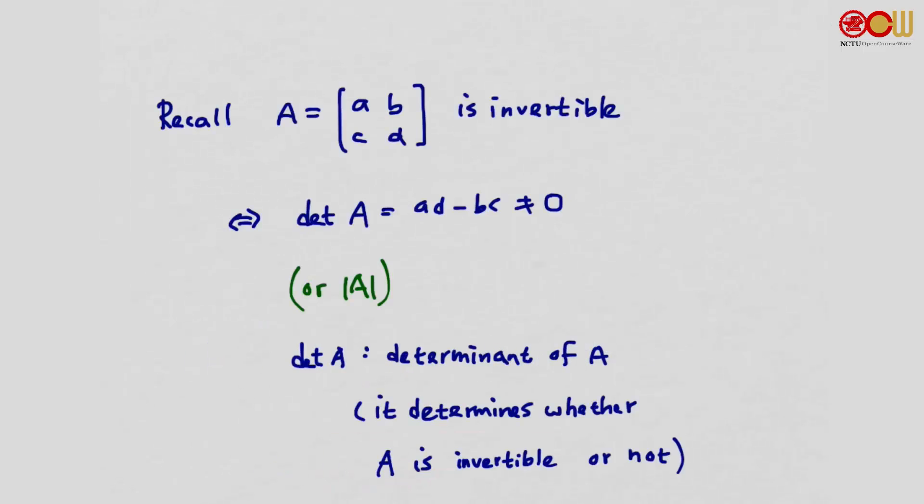Sometimes we use the notation like absolute value to denote the determinant, and we read this as determinant of A. Why is it called determinant? Because it determines whether A is invertible or not. By examining whether determinant of A equals 0 or not, we can determine whether A is invertible.